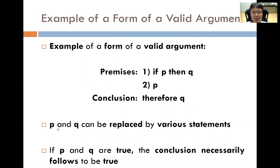P and Q can be replaced by various statements. It is true that if we agree that Premise 1 — 'if P then Q' — is true, and we also agree on Premise 2 that P is true, then we do not have to argue whether the conclusion is true or not. If the argument is in this form, it is guaranteed that if we agree the premises are true, the conclusion must necessarily follow. This is a form of a valid argument.